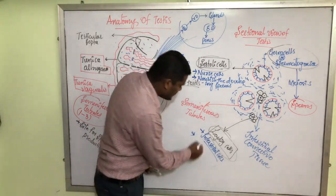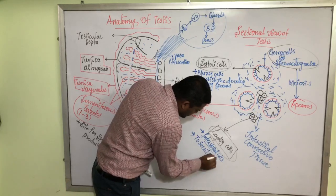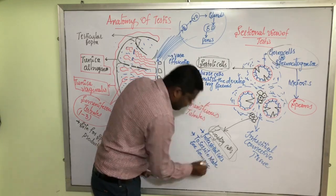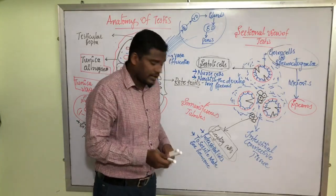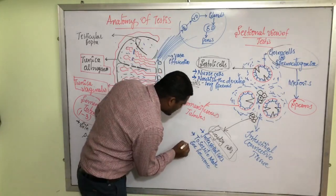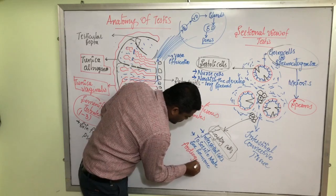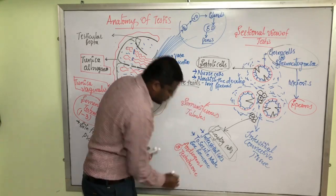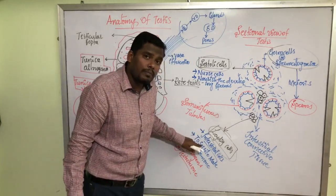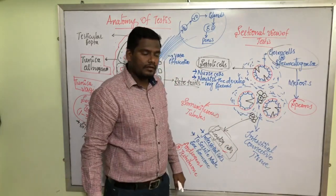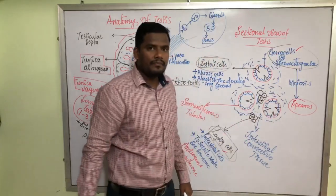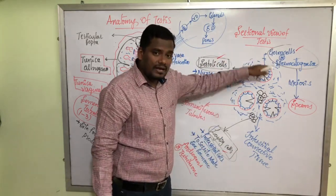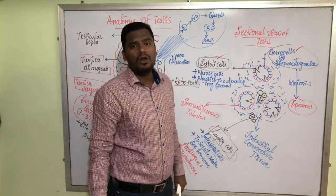Leydig cell's main function is to secrete male sex hormone. So remember these three cells: the sperm-producing cell is the germ cell, the nourishment cell is the Sertoli cell, and the male sex hormone secreting cell is the Leydig cell. These three cells are very important and can be confusing - they are very important for both board as well as competitive exams.